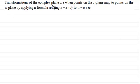Transformations of the complex plane are when points on the z-plane map to points on the w-plane by applying a formula relating the complex number z equals x plus iy to the complex number w equals u plus iv.